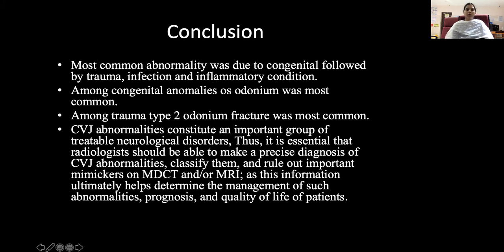Conclusion: the most common abnormality was congenital, followed by trauma, infection, and inflammatory conditions. Among congenital anomalies, os odontoideum was most common. Among trauma, type 2 odontoid fracture was most common. CVJ abnormalities constitute an important group of treatable neurological disorders. It is essential that radiologists be able to make a precise diagnosis, classify CVJ abnormalities, and rule out important mimics on CT and MRI, as this information ultimately helps determine management, prognosis, and quality of life of patients.